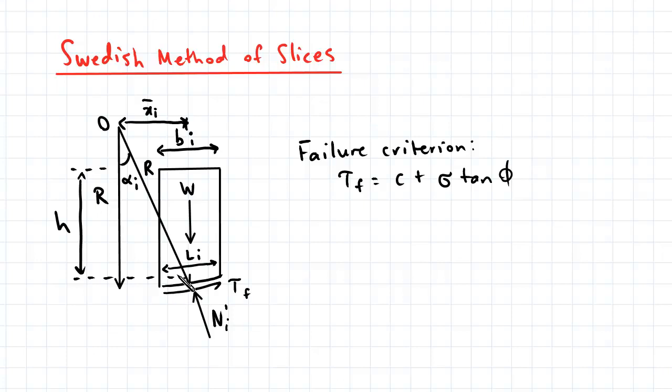The angle that the center of the slice forms with the center of the slip circle is denoted by this angle here, alpha_i.